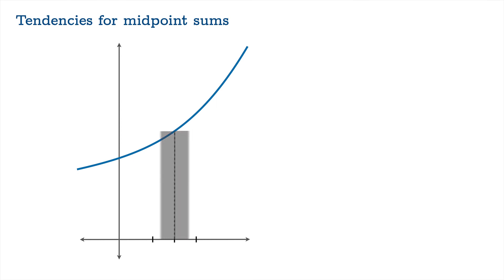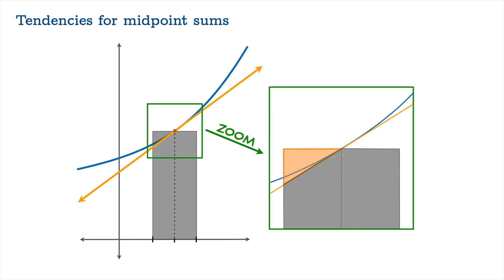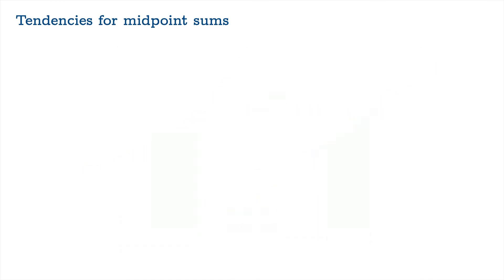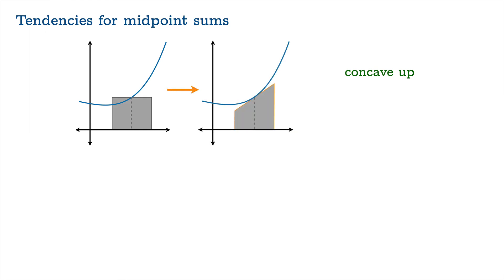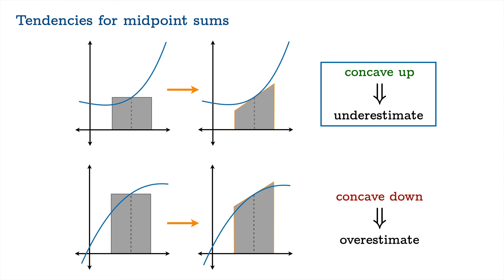Let's imagine a typical rectangle used in a midpoint sum where the graph is concave up. We isolate this point, draw a tangent line, and zoom in. We notice that the overestimate can be swiveled into place, giving us what we could call a tangent trapezoid, which has the same area as the original rectangle. Because the graph is concave up, the area of the tangent trapezoid — and therefore the rectangle — is actually smaller than the area we're trying to approximate. So when a graph is concave up, a midpoint rule tends to underestimate the actual area. And when a graph is concave down, the midpoint rule tends to overestimate the actual area.